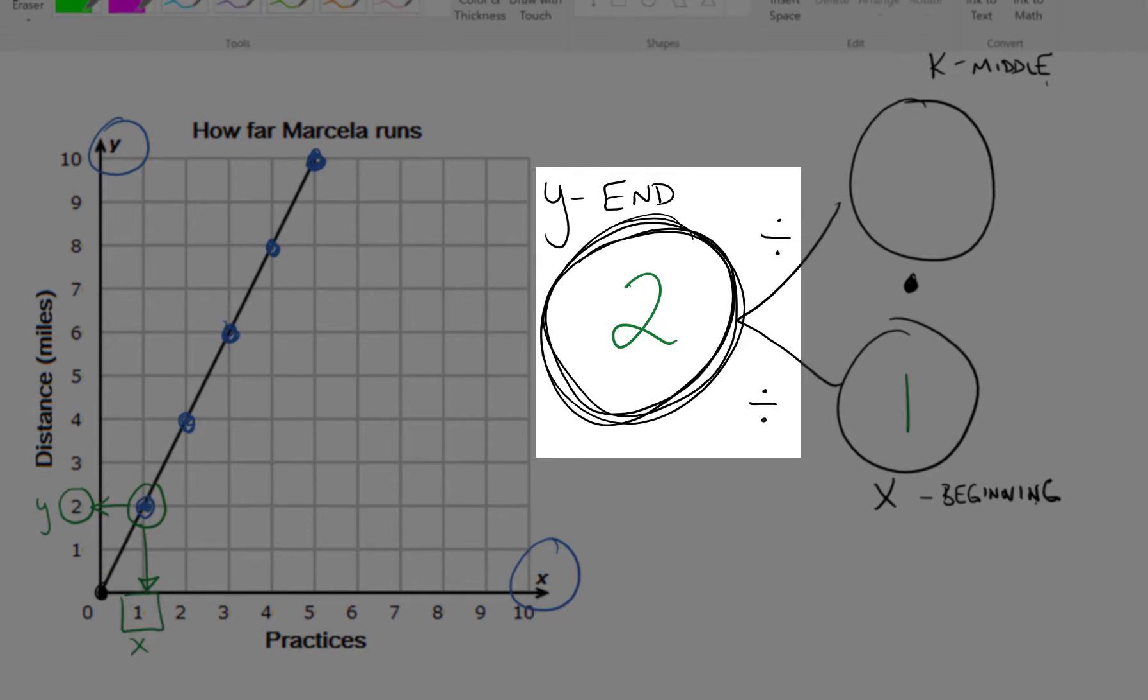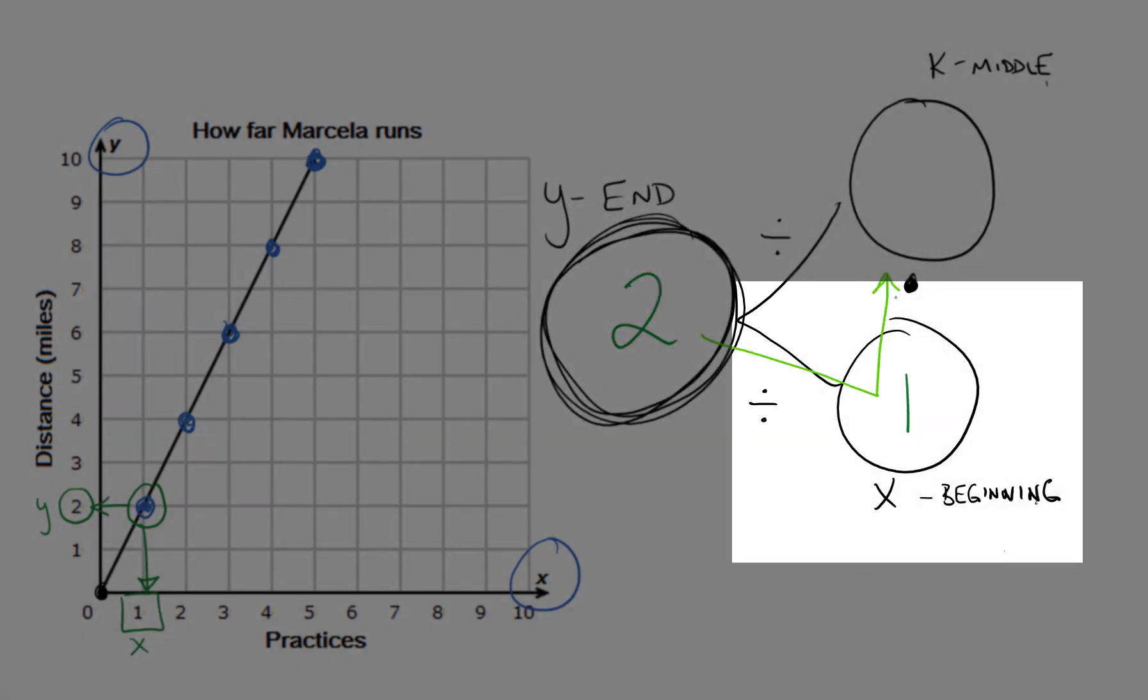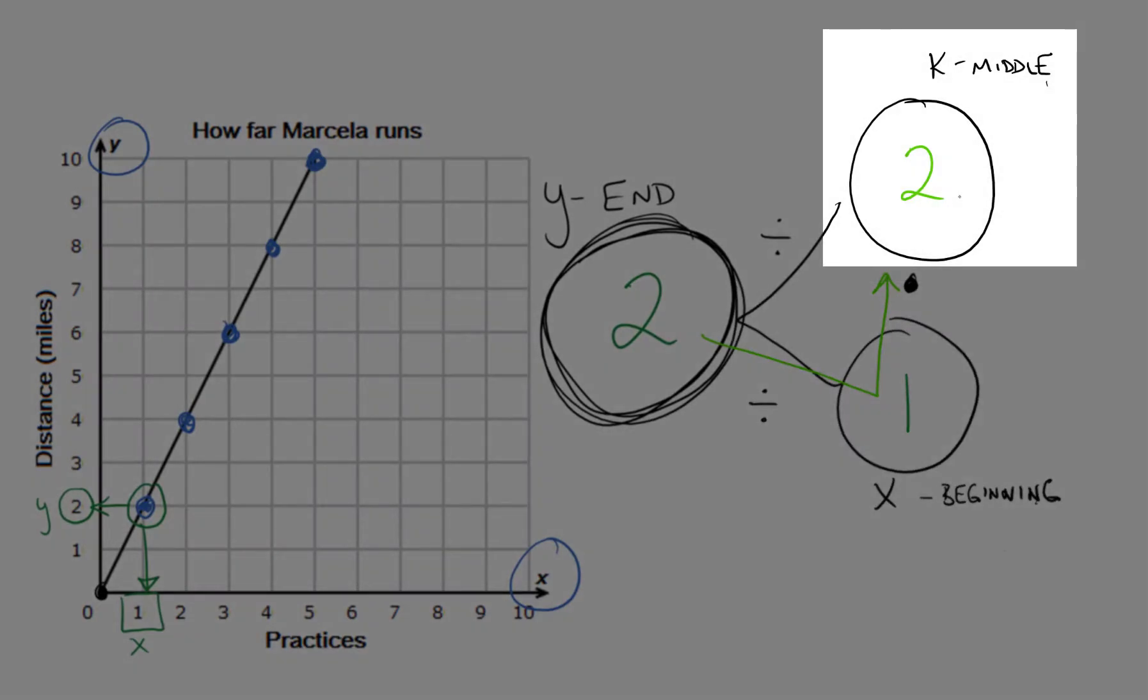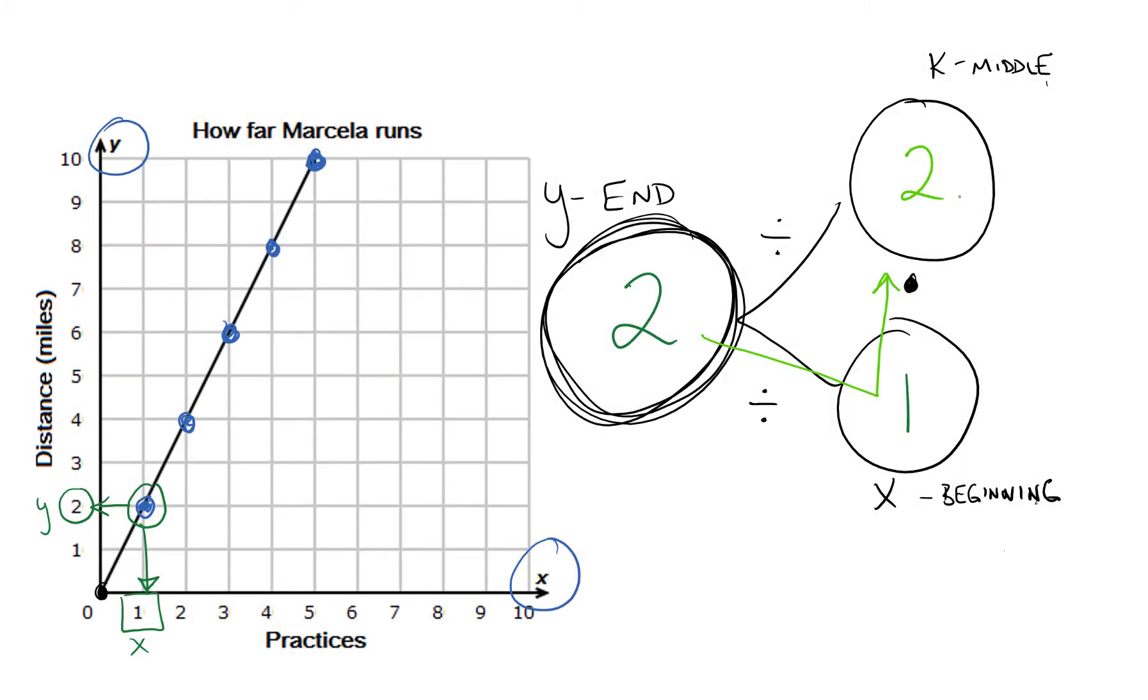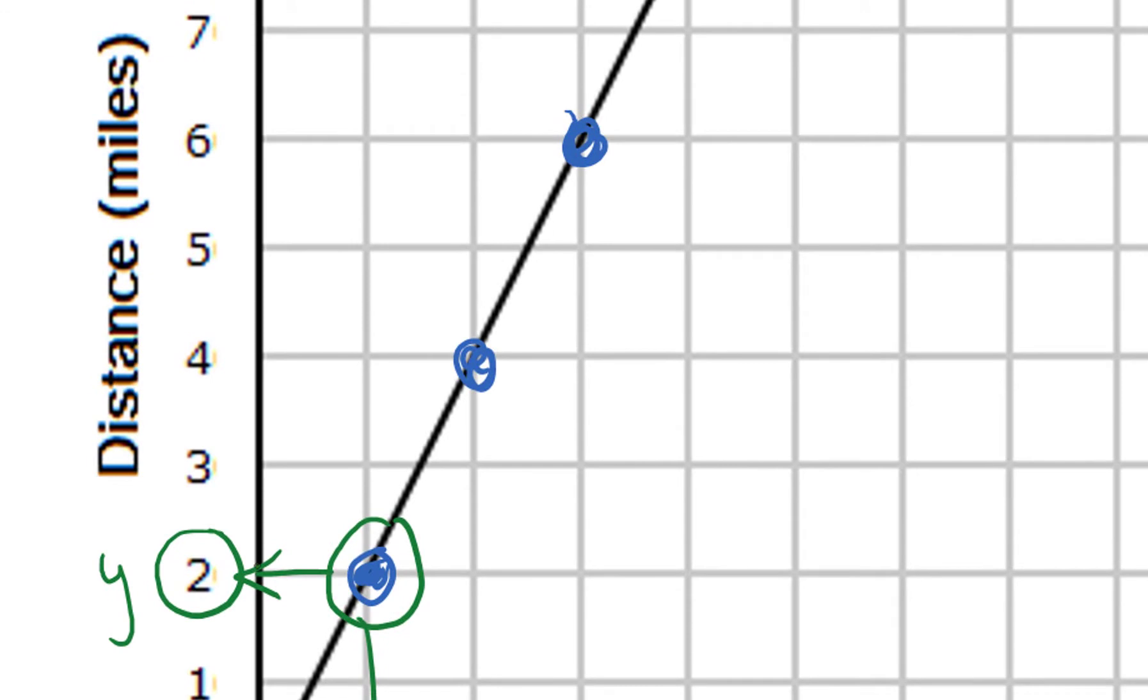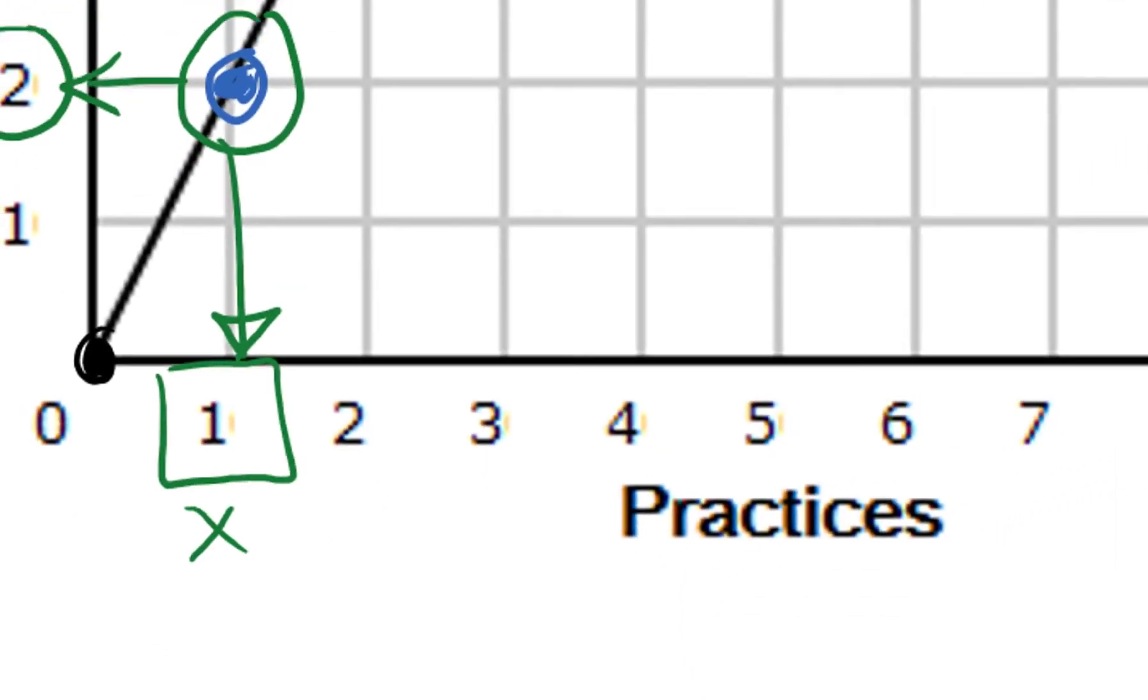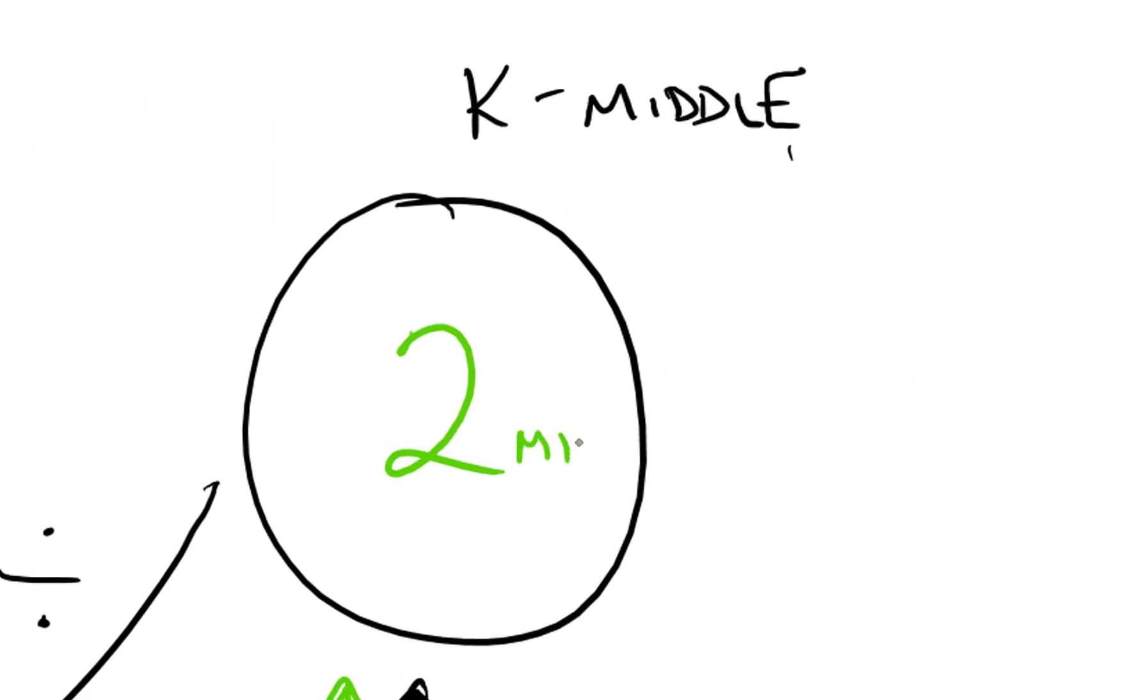I know that 2 divided by 1 is going to leave me with a number of 2, and right now that looks like our constant. That looks like the unit rate. It shows that this person is running 2 miles every 1 practice, so we can say 2 miles per practice. That right there is our unit rate.